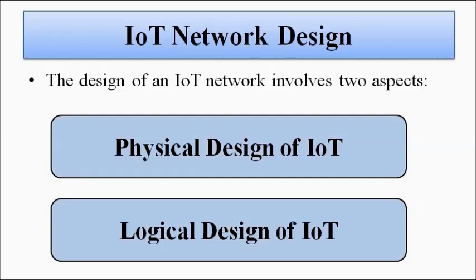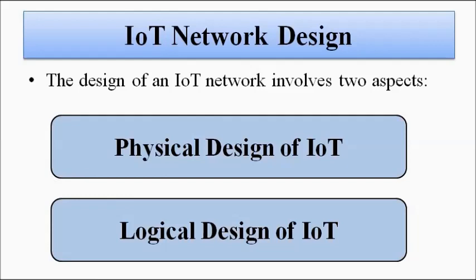If we divide the IoT network design into broad categories, it is divided into two: first is the physical design of the IoT network, and second is the logical design. The physical design gives us a concrete, practical representation of how things will look and how various things will be done. The logical design gives us an abstract representation.